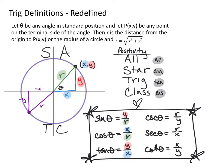Cosecant, secant, and cotangent are just the reciprocals of the matching functions. So cosecant = r/y, secant = r/x, and cotangent = x/y — just the reciprocals.